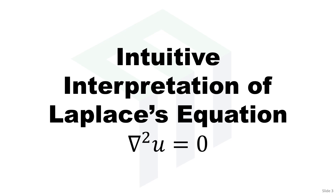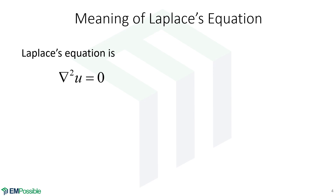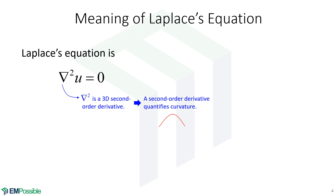Let's think mathematically about the meaning of Laplace's Equation. We have this del squared — the del is the three-dimensional derivative operation, and that's squared, so we're talking about a three-dimensional second-order derivative. Second-order derivatives quantify in some way the curvature of the function u. In Laplace's equation, we have set that curvature to zero, which means this function u has to be varying linearly. That's what Laplace's equation really says.